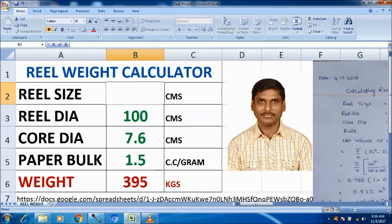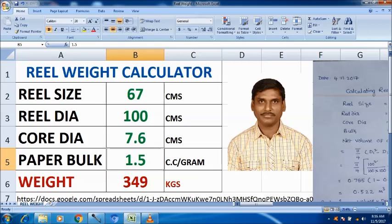Let us say, we have to do for reel size 67, reel dia 100, 1.7 is the bulk. 1.7 and enter. 308 kg it has come.